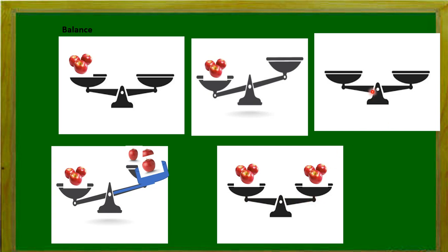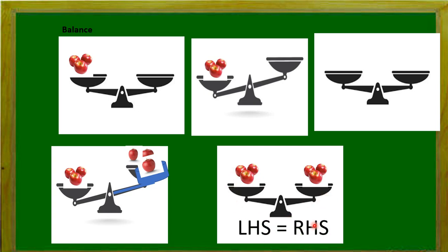Observe the previous figure: when both plates of the balance are empty, the plates are in a straight line and we can say both are at the same level. Also, when plates are filled with equal weights, in this situation also both the plates are at the same level. So we can conclude that when the balance plates are empty, the left hand side plate is equal to the right hand side plate. Similarly, when plates contain equal weight, in this also left hand side and right hand side plates are equal. So we can say left hand side is equal to right hand side.